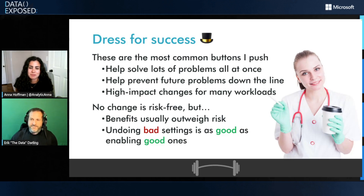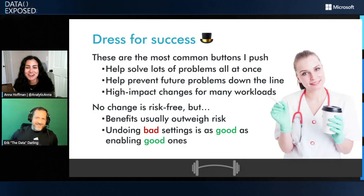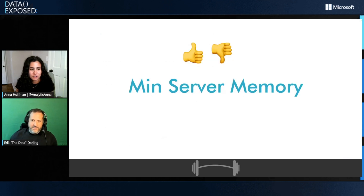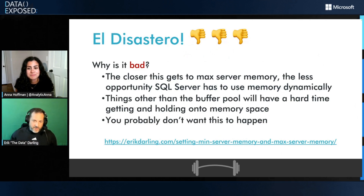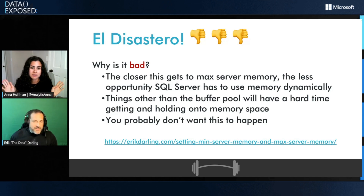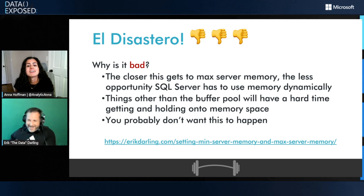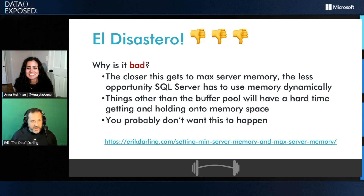The first one is min server memory. This one's a stink bomb. What I see a lot of people do is not just turn it up a little bit — they turn it up all the way and make it the same as max server memory. As soon as you do that, all sorts of things other than the buffer pool start having a really hard time getting and holding on to memory. That's something you probably don't want happening during your busy production workload. The recommendation: min server memory defaults to zero. It's people who go out of their way to change it to something bad — making min server memory the same as max server memory — and that is a bad time.